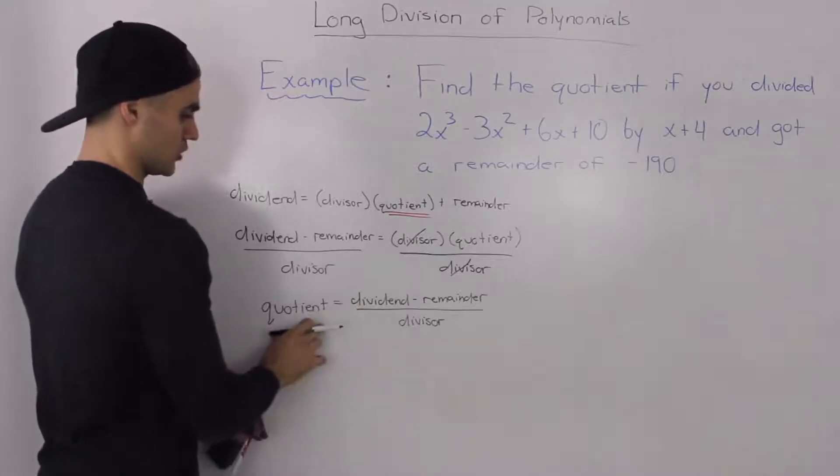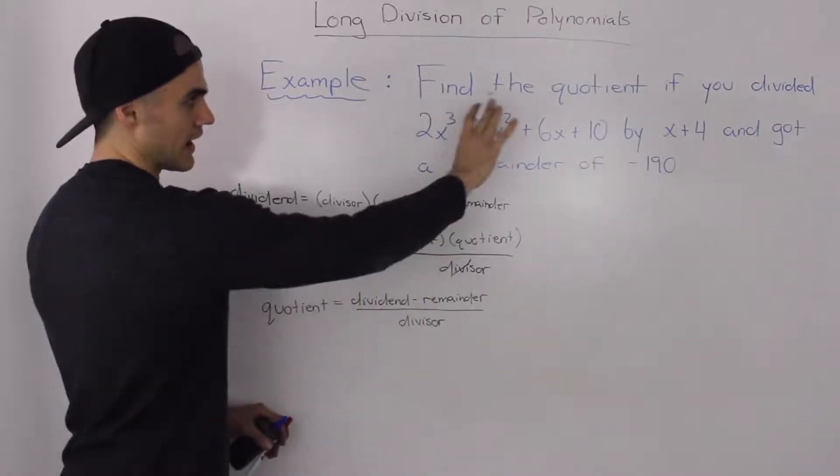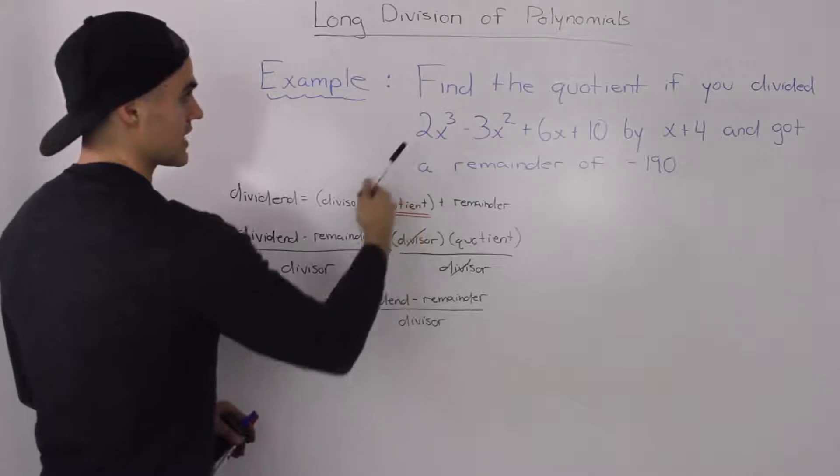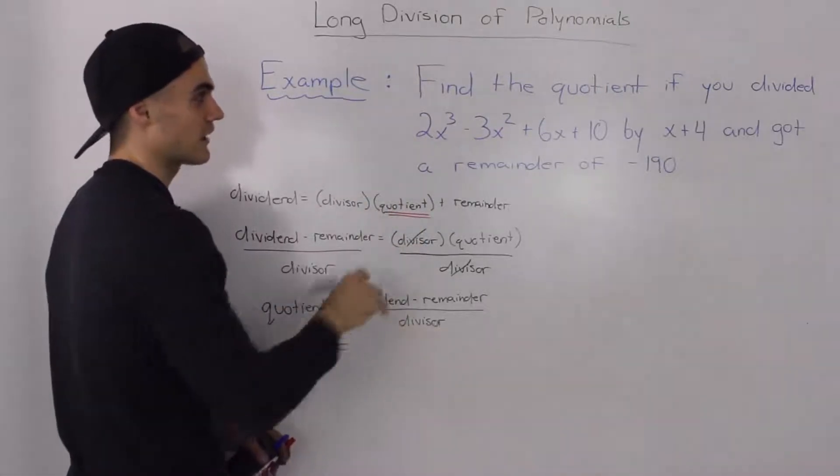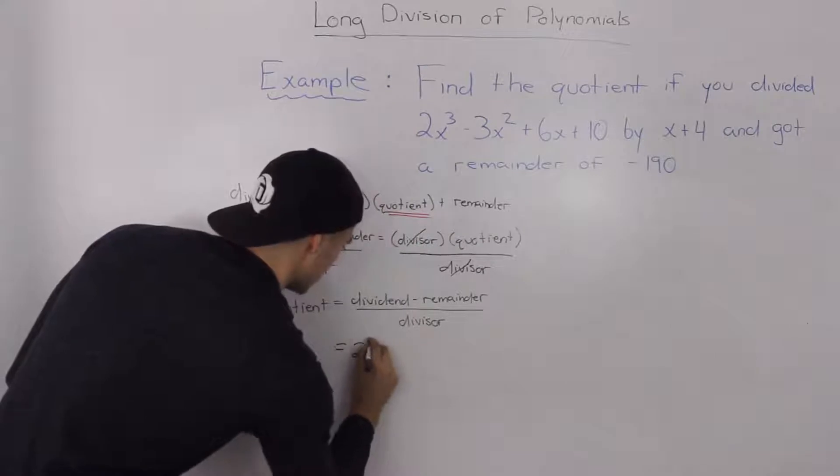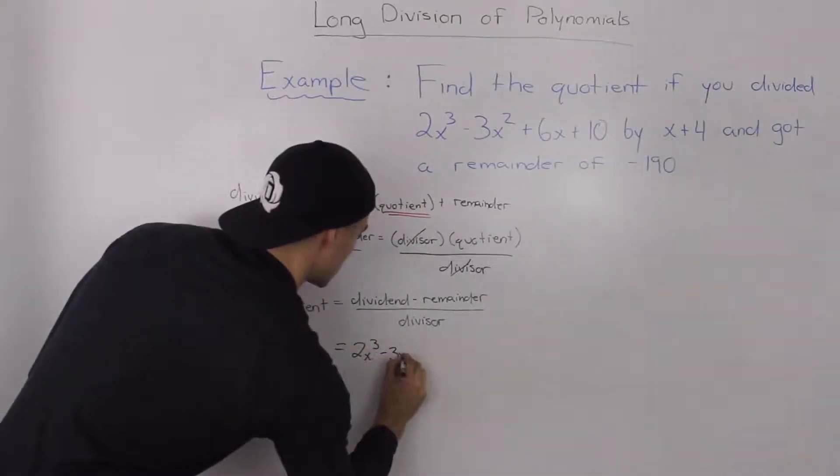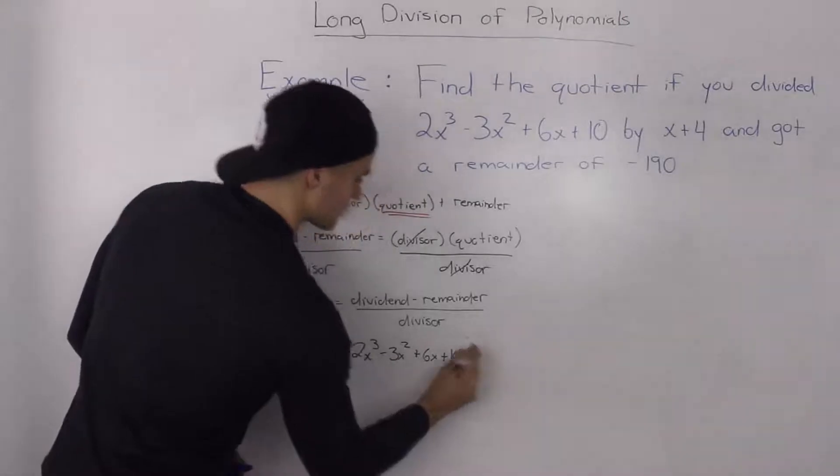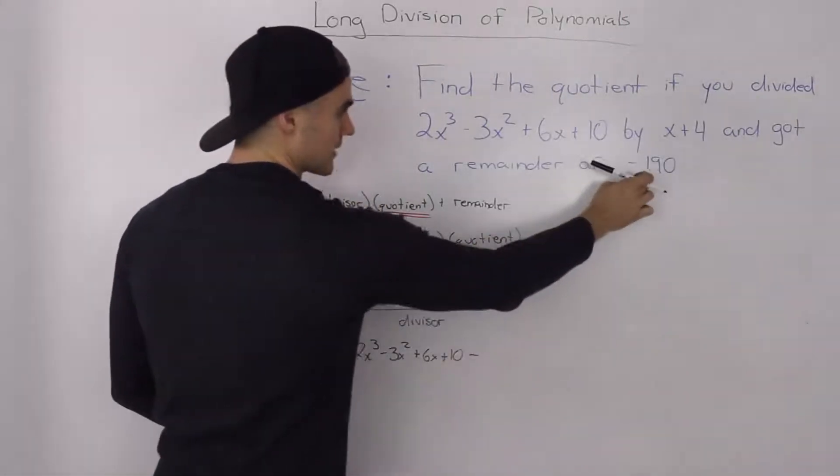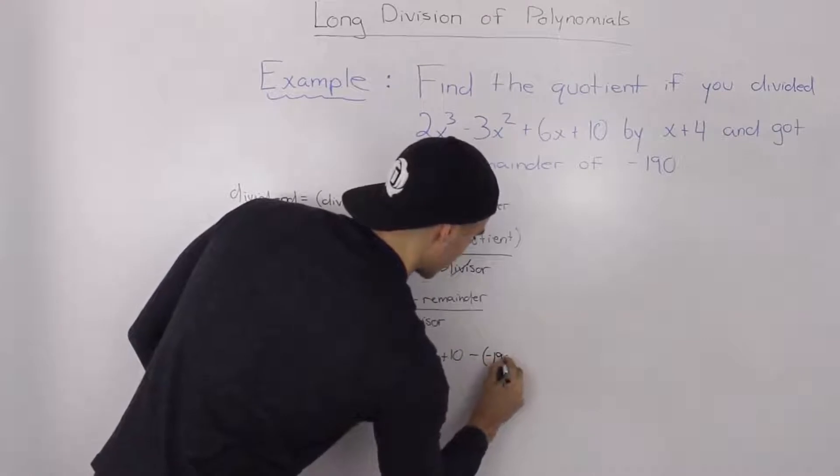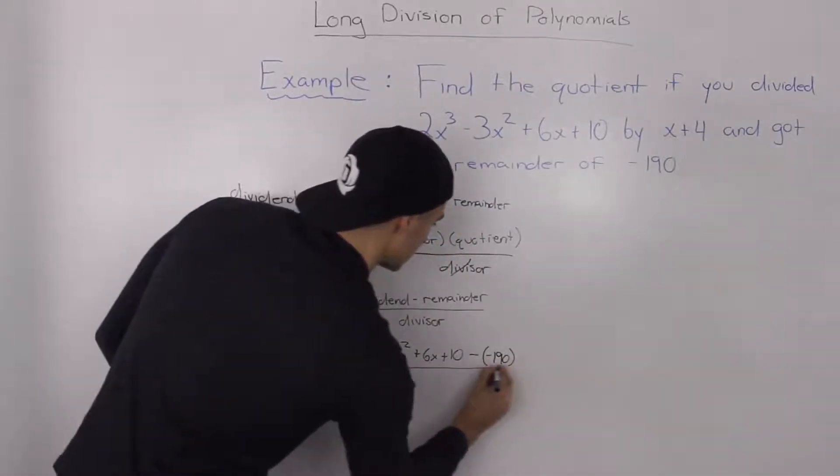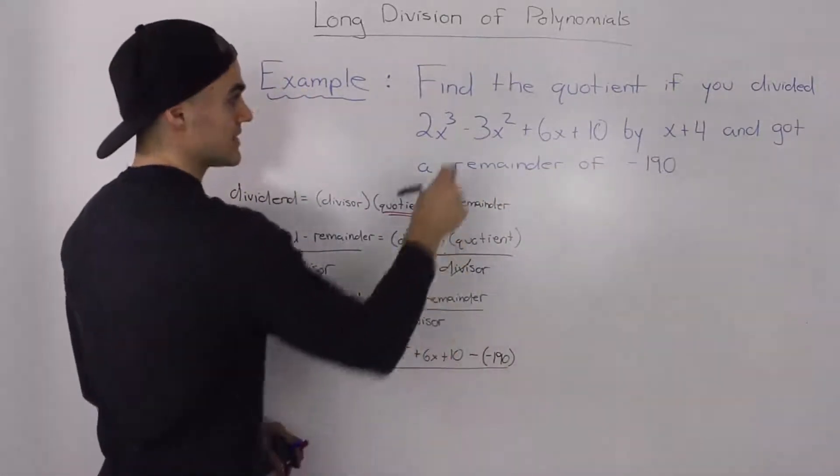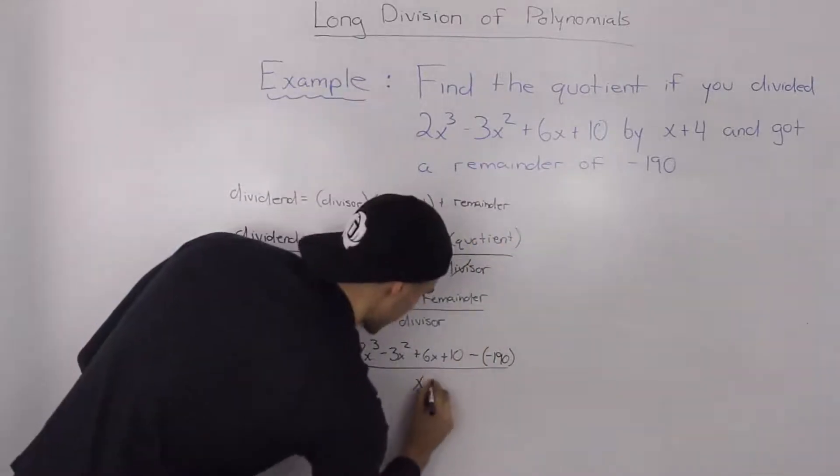Now we're looking for the quotient so if we take our question here and plug everything into this expression, what is our dividend in this case? Well it's basically the polynomial that we're dividing, so it's this 2x³ - 3x² + 6x + 10, and then we are subtracting the remainder, so we're subtracting this -190. And then that's going to be all over our divisor which is the polynomial that we're taking our dividend and dividing by, which is x + 4.